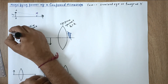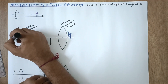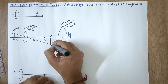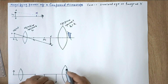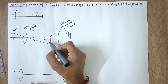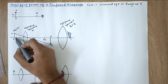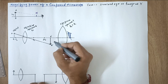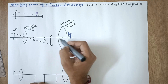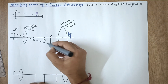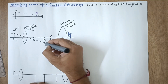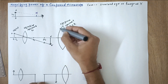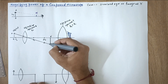Let's call this object AB and this image A'B'. This image is a real and inverted image because the object is between f and 2f. What happens next is that this image behaves as an object for the eyepiece, because the rays continue and hit the eyepiece — the incident rays appear to come from A'B'.